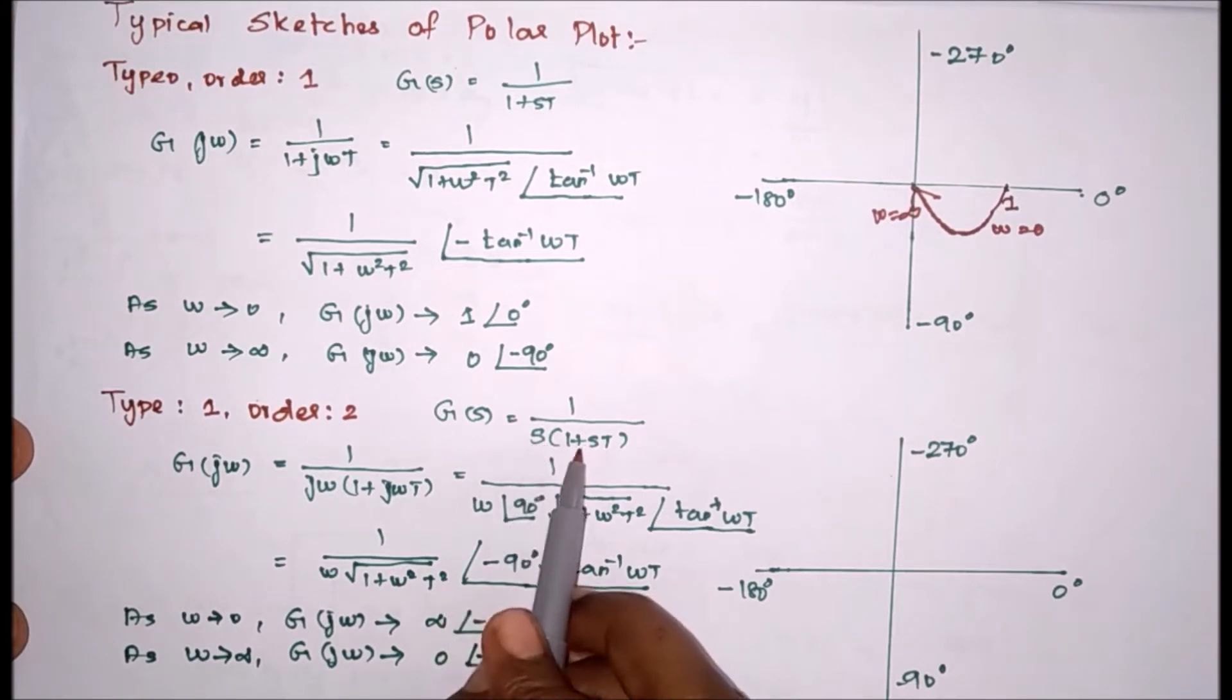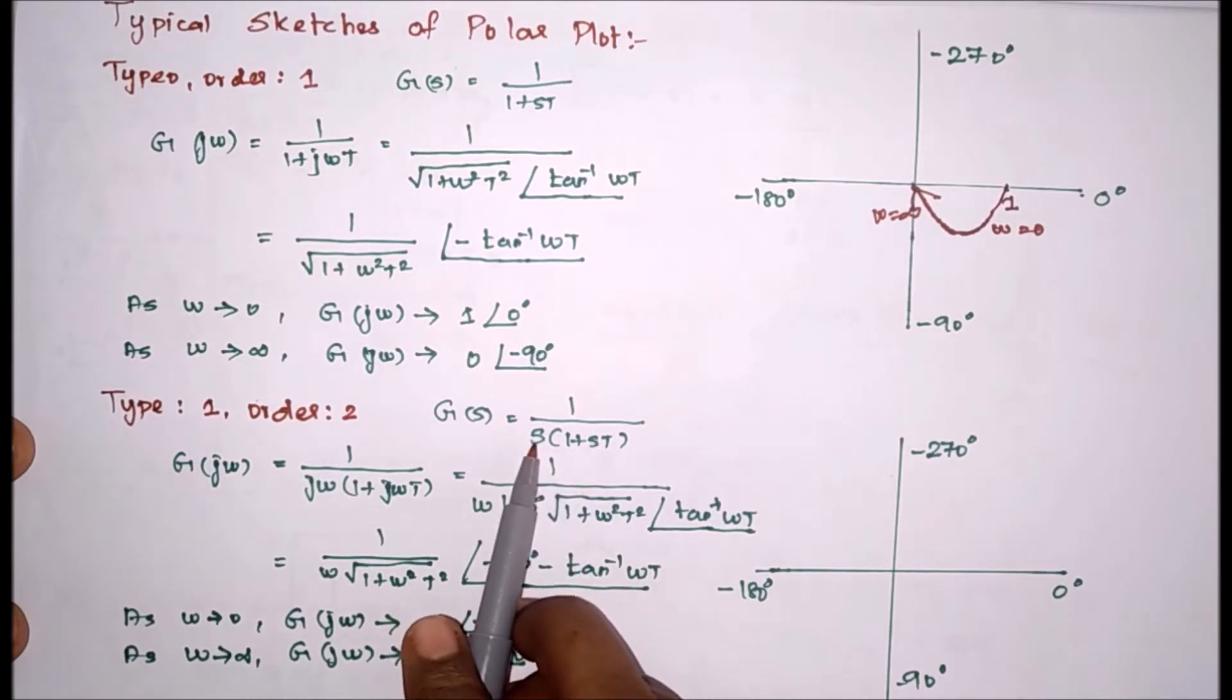Here one s inside, one s. If we multiply we will get s square, therefore order equal to 2. Maximum power of s is order, number of poles on the origin is type.